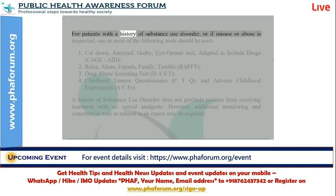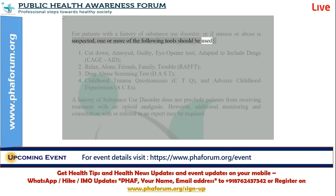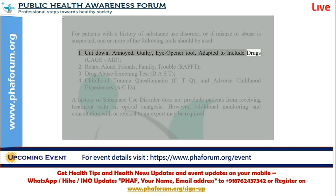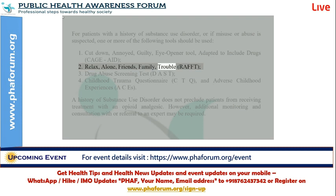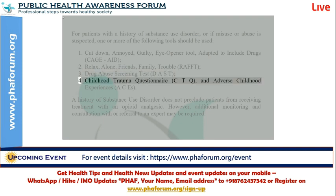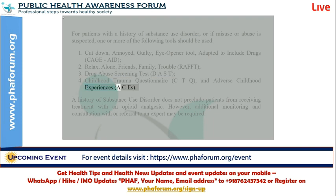For patients with a history of substance use disorder, or if misuse or abuse is suspected, one or more of the following tools should be used: one, the CAGE-AID (Cut down, Annoyed, Guilty, Eye opener, adapted to include drugs); two, RAFT (Relax, Alone, Friends, Family, Trouble); three, the Drug Abuse Screening Test, DAST; four, the Childhood Trauma Questionnaire, CTQ, and Adverse Childhood Experiences, ACEs.